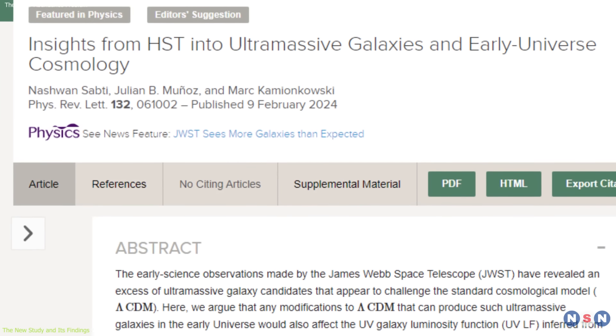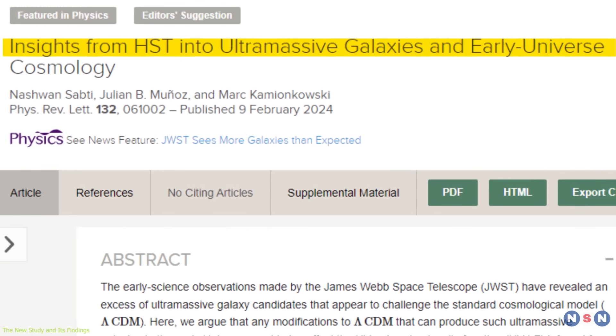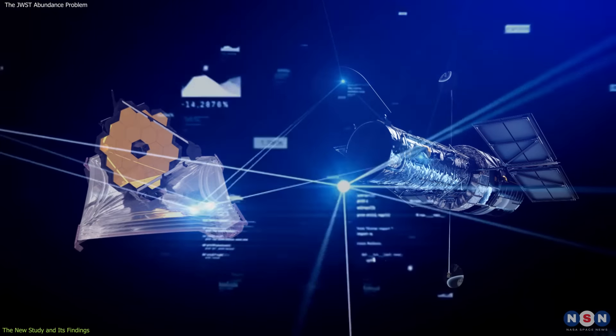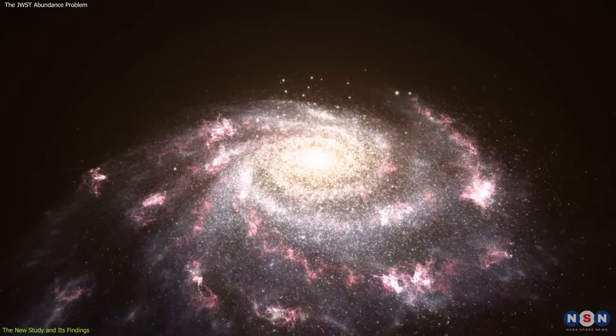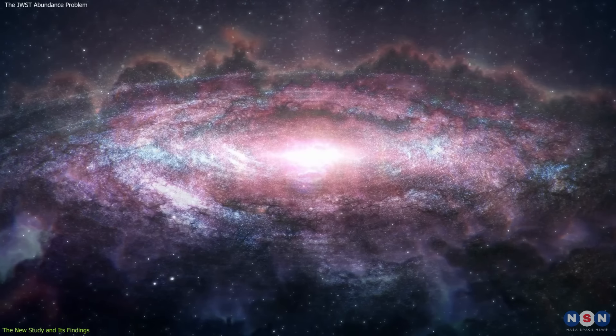It is titled Insights from Hubble Space Telescope into Ultramassive Galaxies and Early Universe Cosmology. It uses the latest data from James Webb and Hubble to test the cosmological implications of the ultramassive galaxies, and to explore the alternative explanations for them.